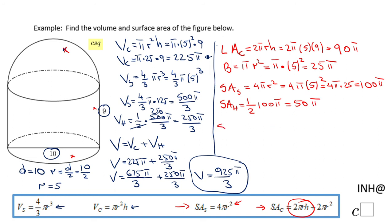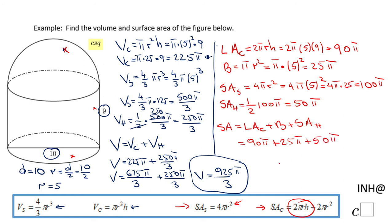The total surface area of this composite shape is the lateral area of the cylinder plus one base plus the surface area of the hemisphere: 90 pi plus 25 pi plus 50 pi. The final answer is 165 pi square units. If you enjoyed this video, don't forget to click the like button and come back to C Squared for more help. Thank you.